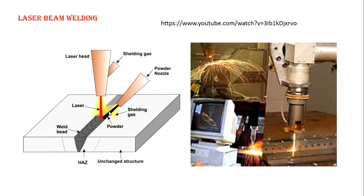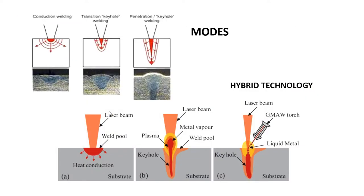There are a few modes available in laser beam welding process: the first is conduction welding, then transition, and then keyhole penetration. In conduction mode, only a wider range of bead is available. The red color represents the molten pool created by the laser beam, which is very small in conduction mode. In transition mode it becomes conical, and in keyhole mode it is very very deep.